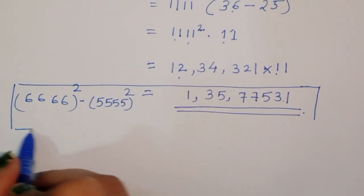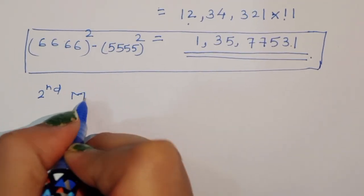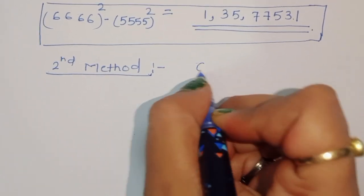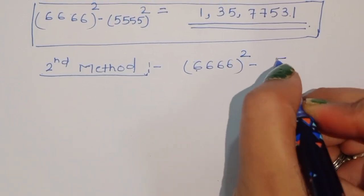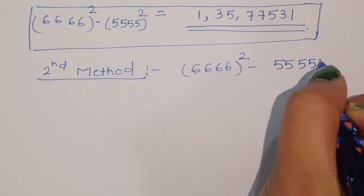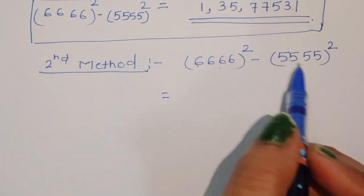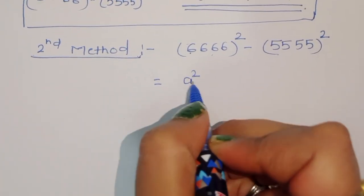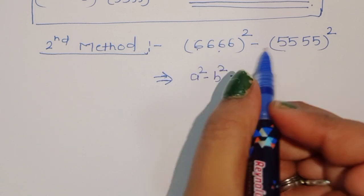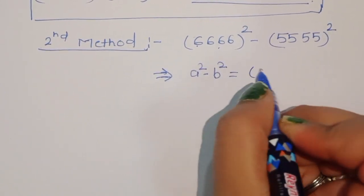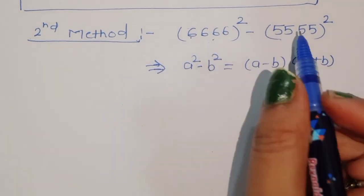Now we are using the second method. The question is again: 6666 squared minus 5555 squared. We can apply the formula a squared minus b squared, which equals (a minus b) times (a plus b). We know this formula.